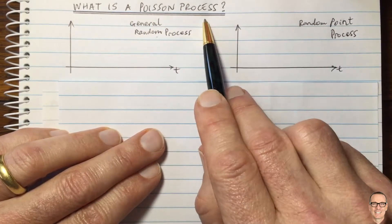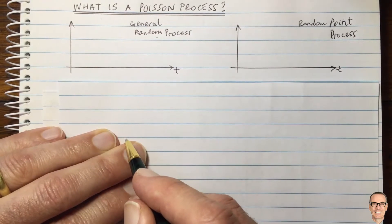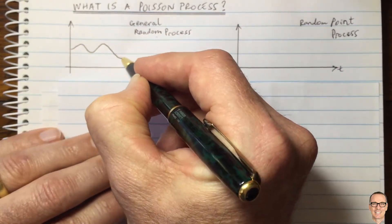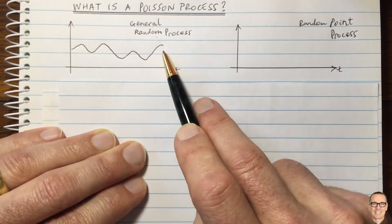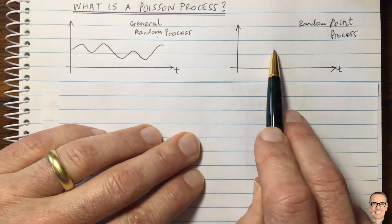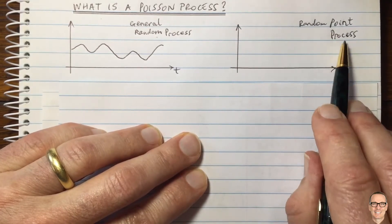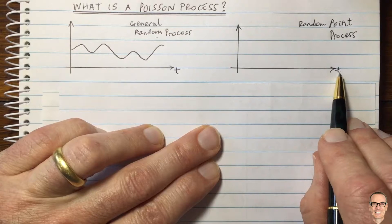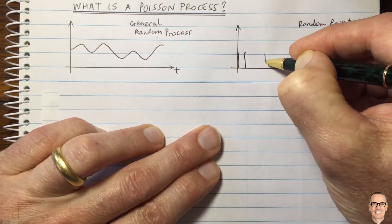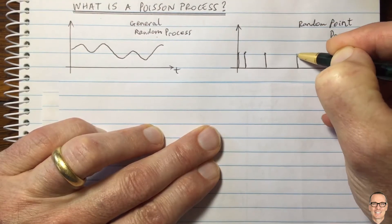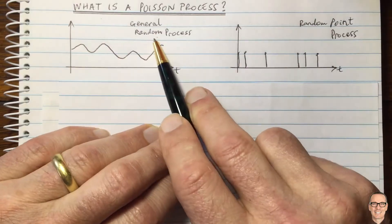So what is a Poisson process? Let's look at a general random process — for example, the temperature in a room — which varies continuously with time. It's random but it's a continuous function. Poisson processes deal with something different: they deal with processes that are discrete, called random point processes, and they occur at particular times. Events occur here, another event occurs here — these events are occurring in time. They either happen or they don't happen. So this is a different type of process to the general random process.